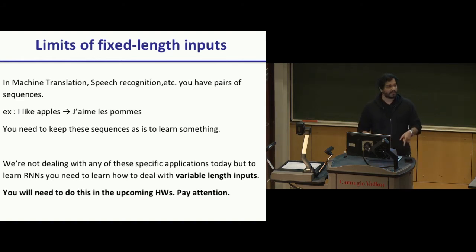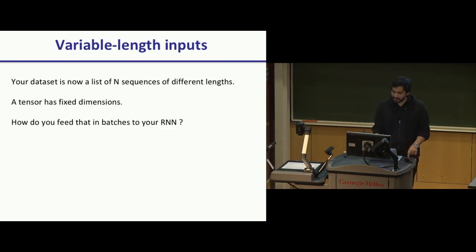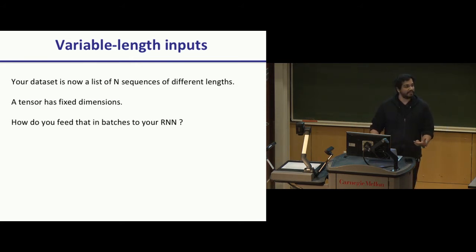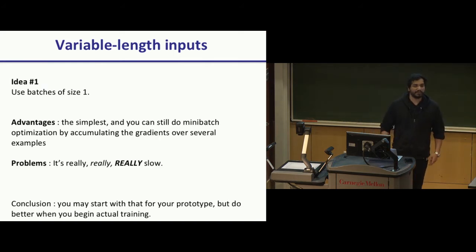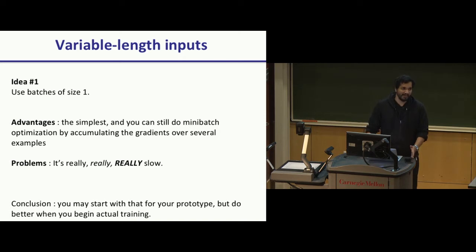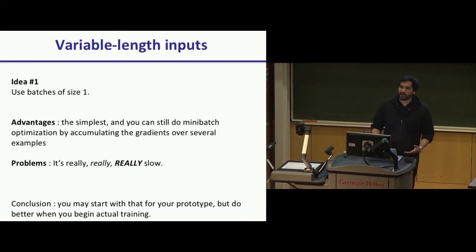Your dataset now has a list of N different sentences or input sequences, each a different length — but tensors passed to your PyTorch model have to be fixed dimension. How do you batch stuff if they're all different lengths? Idea one: just use batch size of one. The dimensionality is going to be the same; it's just the length that's different. This is the simplest and almost trivial to code, but it is extremely slow — you'll burn through thousands of dollars in AWS credits. You can start with it to check your data loader is working, but for anything reasonable, this won't work.